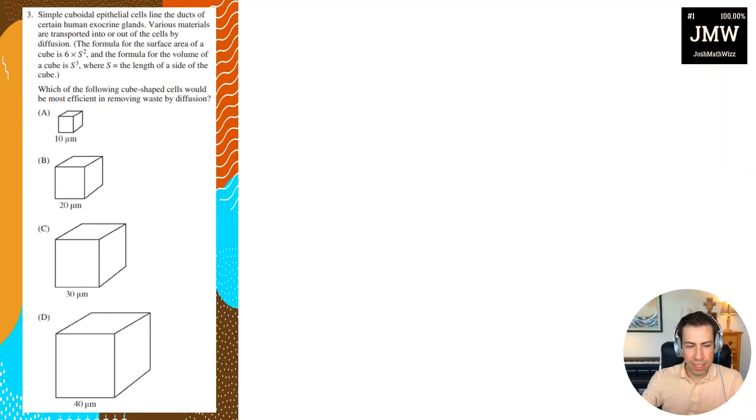Okay, question number three. I love this question because it comes up almost every year it seems. Basically, I'll just summarize the question. We want to figure out which of the following cube-shaped cells are going to be the most efficient in removing waste by diffusion.